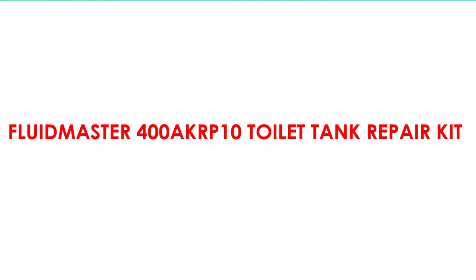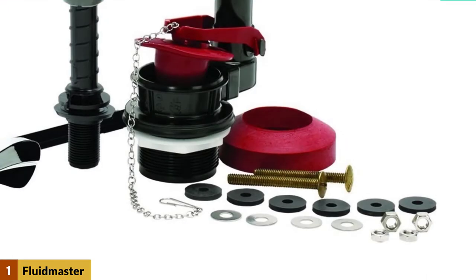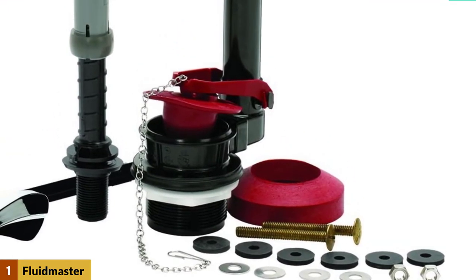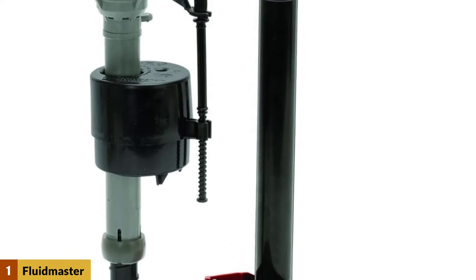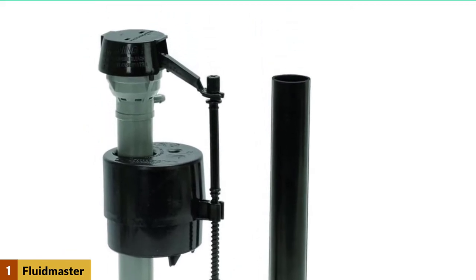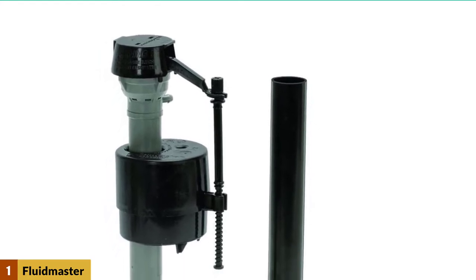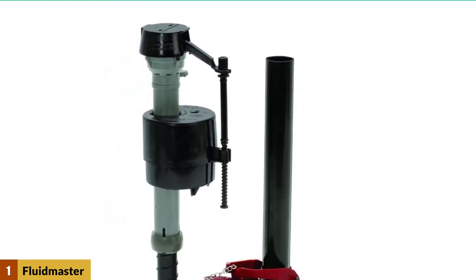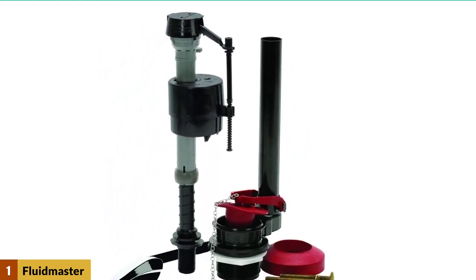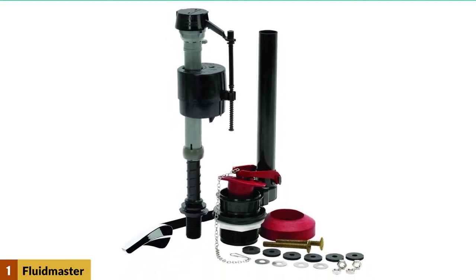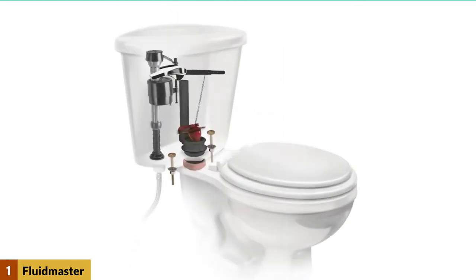At number one, Fluidmaster 400AKRP10 toilet tank repair kit. This complete repair kit is compatible with two and three bolt tanks and most toilet models. As a universal repair kit, its components are ideal replacements for broken handles, flush valves, inefficient fill, and leaky flappers. Also, this product is compatible with 1.6 GPF and 3.5 GPF commode designs.